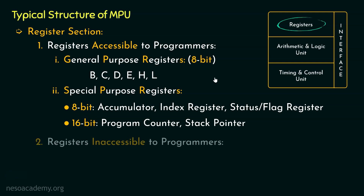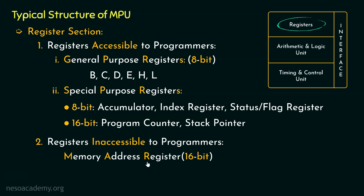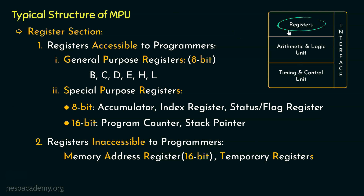Coming to the next category, that is the registers which are inaccessible to the programmers. Here we have MAR, that is the 16-bit memory address register, and also a few TRs or temporary registers. These are of both types — 16-bit and 8-bit. We will learn about all these registers in the entire register section in detail in a different lecture. For now, we are just having an overview of the register section of the 8085 microprocessor.